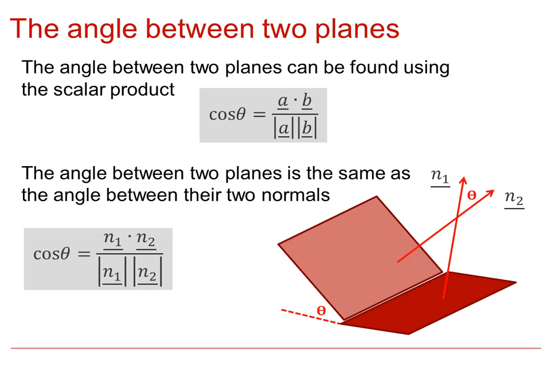The scalar product and angle between two vectors was covered in previous videos, the Vector 1 series. So the angle between two planes can be found using that scalar product. Cos theta equals the scalar product of two vectors A and B, divided by the magnitude of those same vectors.